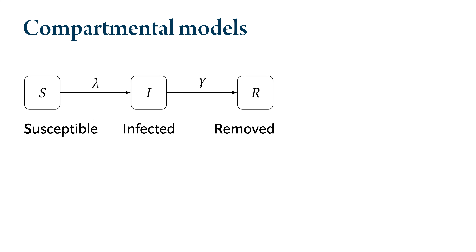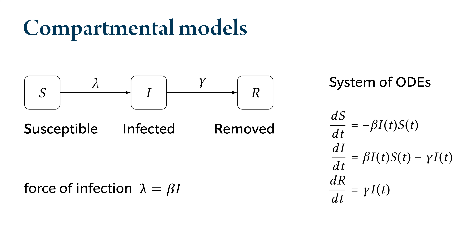Let's start with the simplest SIR model. The entire population is split into three homogeneous compartments: susceptible individuals, infected individuals, and removed individuals. Removed individuals comprise both recovered individuals and deceased individuals. The arrows indicate flows between the compartments — for example, susceptible individuals can get infected and become infected individuals, and eventually they either recover or die from the disease. The rate of flow from the susceptible compartment to the infected compartment is usually called the force of infection, and it is assumed to be proportional to the number of infected individuals in the population. The dynamics of such systems are described by systems of ordinary differential equations.